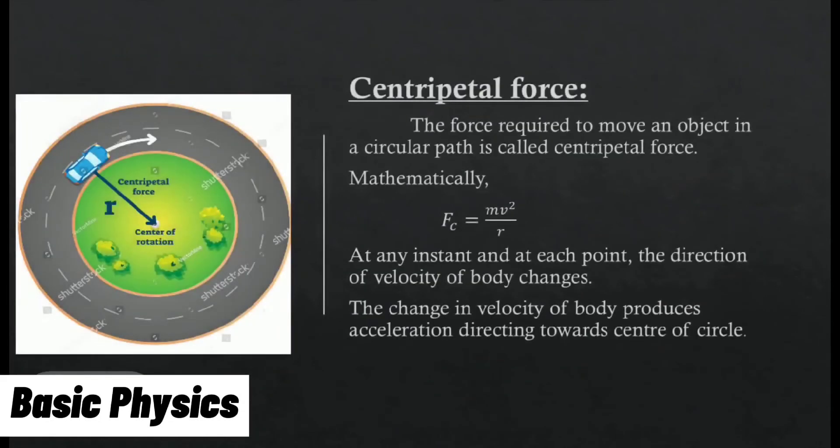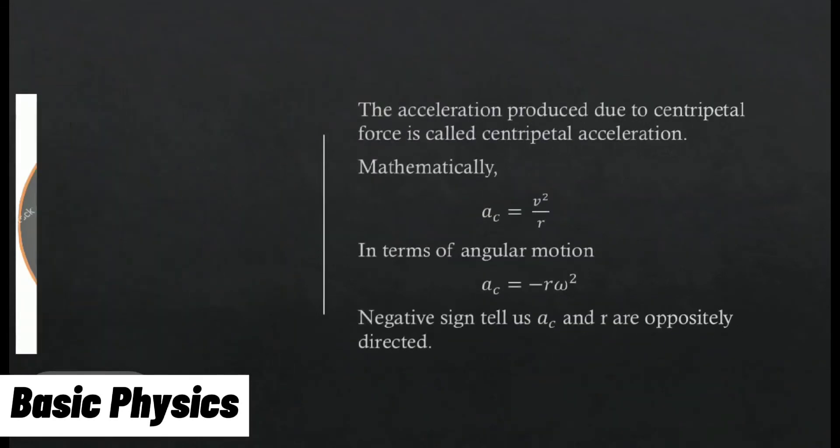Centripetal force: The force required to move an object in a circular path is called centripetal force. Mathematically, F = mv²/r. At any instant and at each point, the direction of velocity of body changes. The change in velocity of body produces acceleration directing towards center of circle.